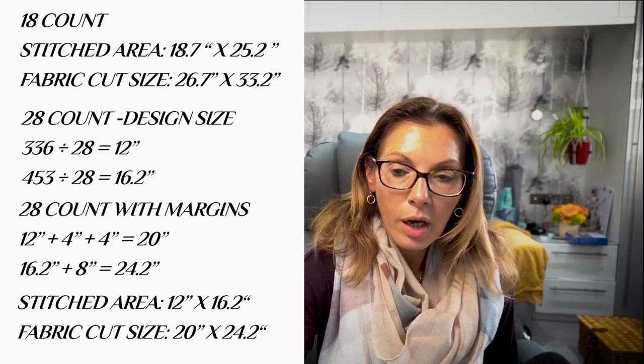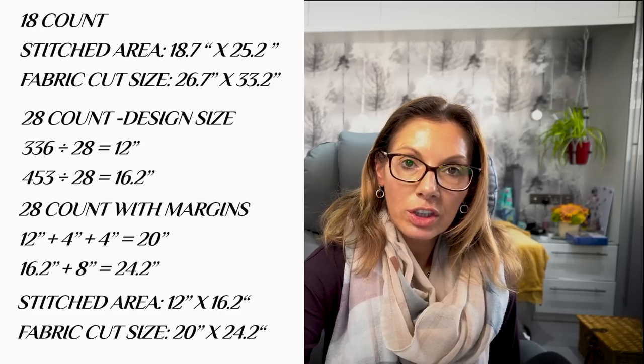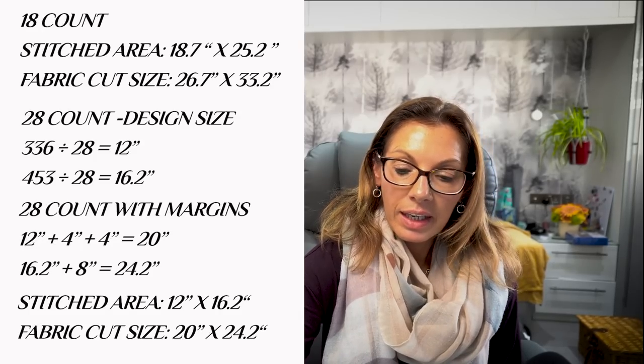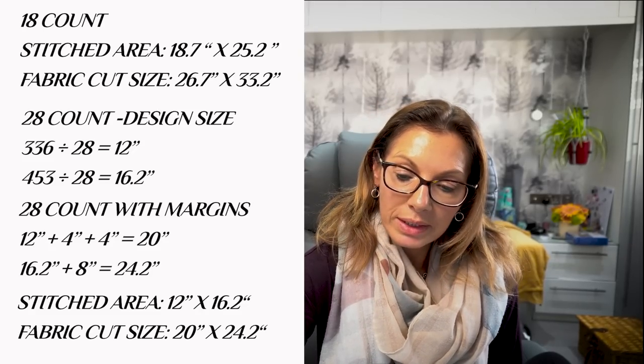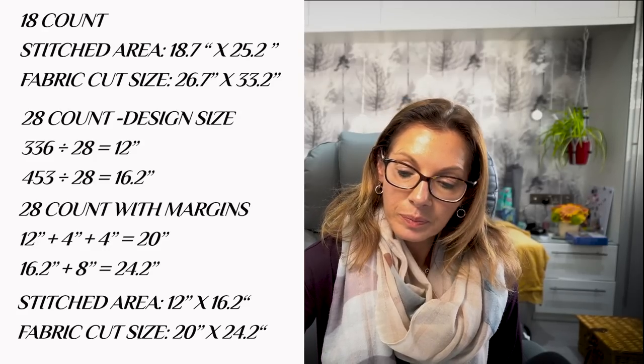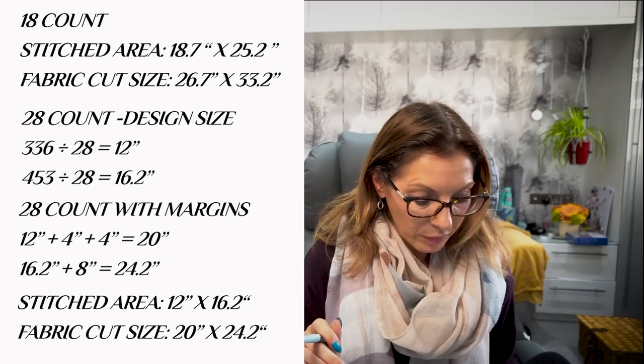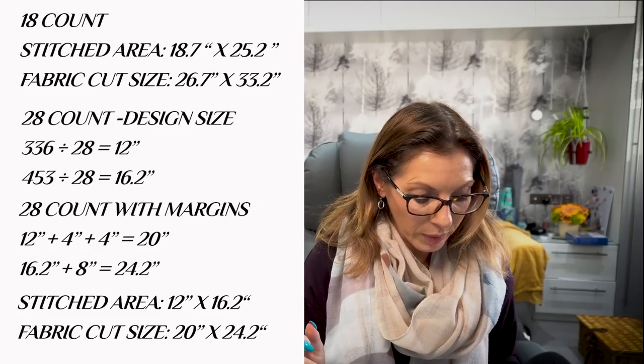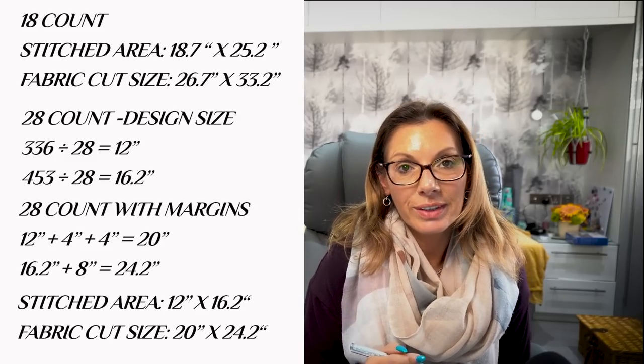There is the difference: on a 28 count, 20 inches wide by 24.2 inches high. On an 18 count, 26.7 inches wide — that's 6.7 inches wider — and 33.2 inches high, which is a whopping 9 inches difference in height. Obviously the stitch size difference doesn't look quite as drastic because I've got four inch margins all the way around, but you could have three inches. I personally wouldn't go less than three inches — not enough wiggle room. This shows how super easy it is: just because something suggests a certain count doesn't mean you have to use it.